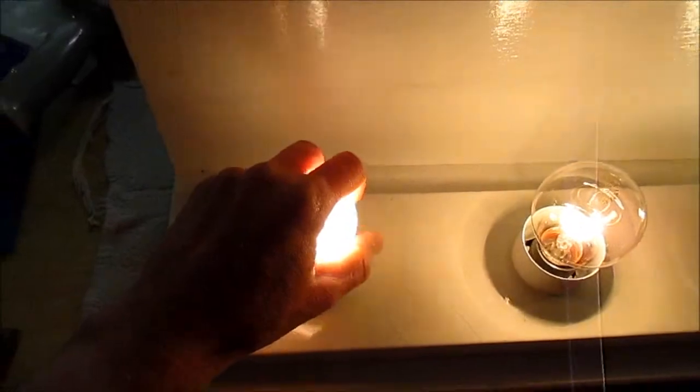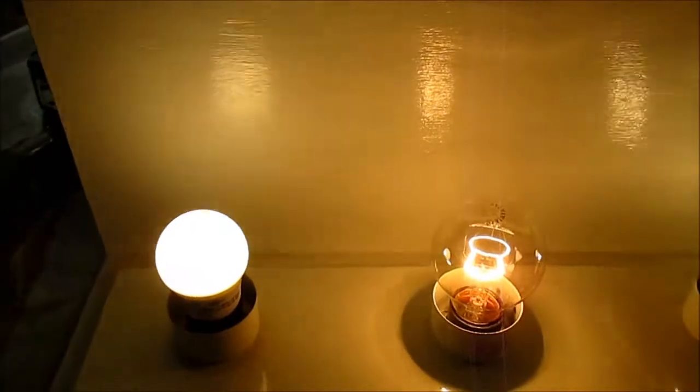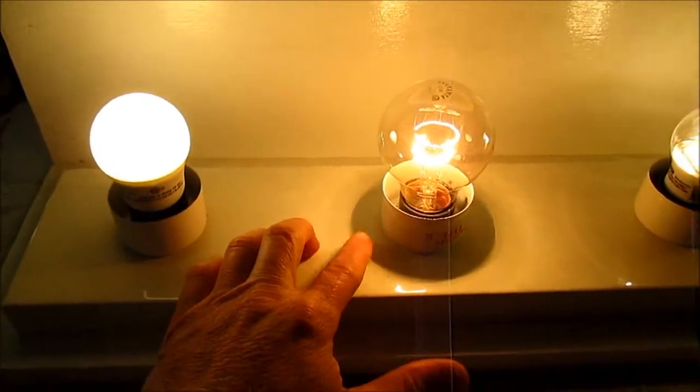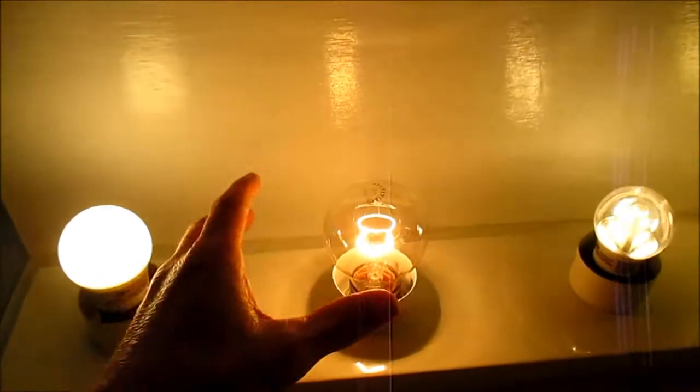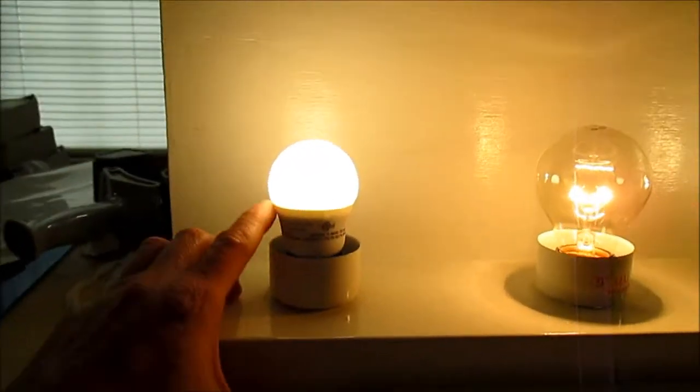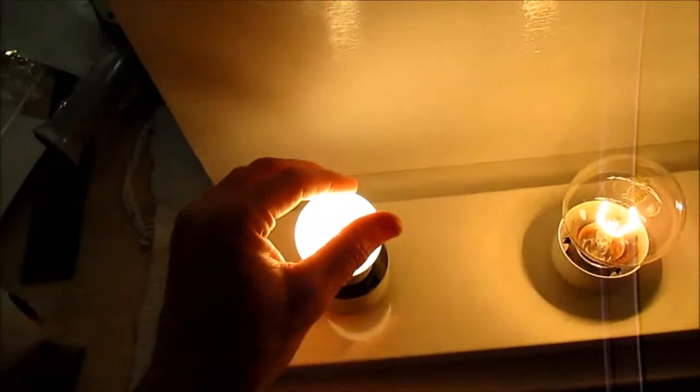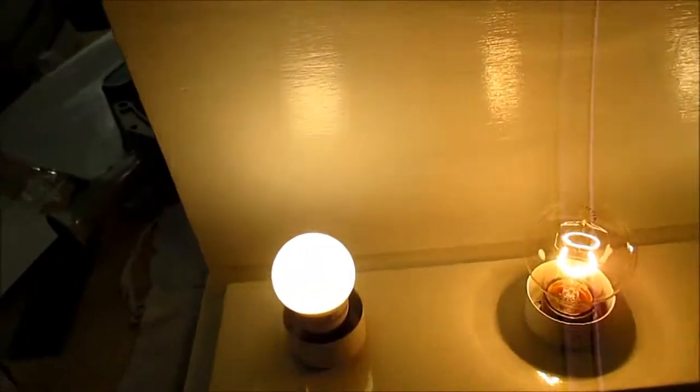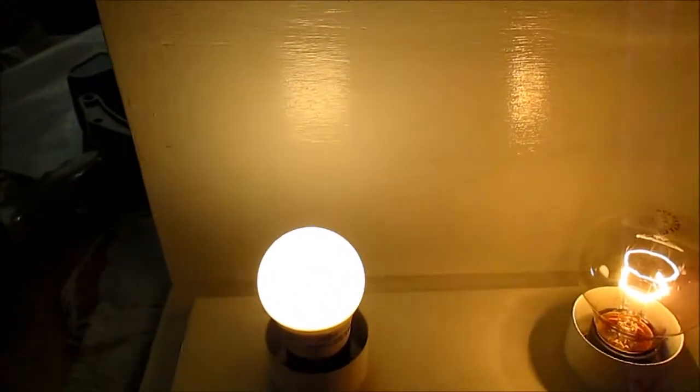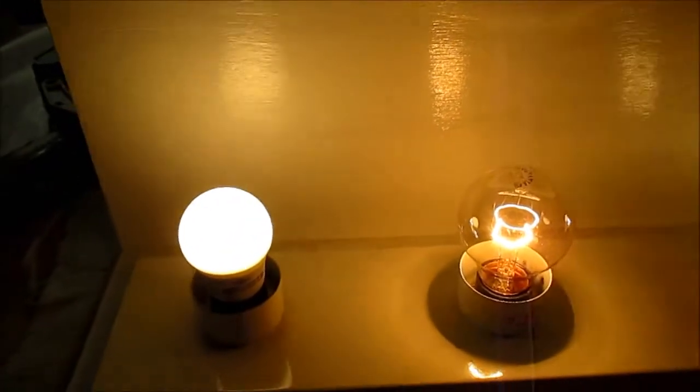It doesn't get real warm at all. As far as the light quality and the dispersion of the light, the 25 watt incandescent bulb does emit more light down, it's more omnidirectional. And this, because of the shape of the dome, doesn't emit as much light downward. But most of the light comes off the sides and top, and that could be advantageous in certain situations and a disadvantage in other situations, depending on how you use the bulb.